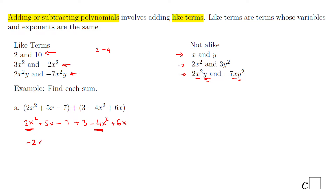Next, we look for the next group of like terms: 5x plus 6x equals 11x. Then the last group of like terms: negative 7 plus 3 equals negative 4. So the final answer for part A is: negative 2x² + 11x − 4.